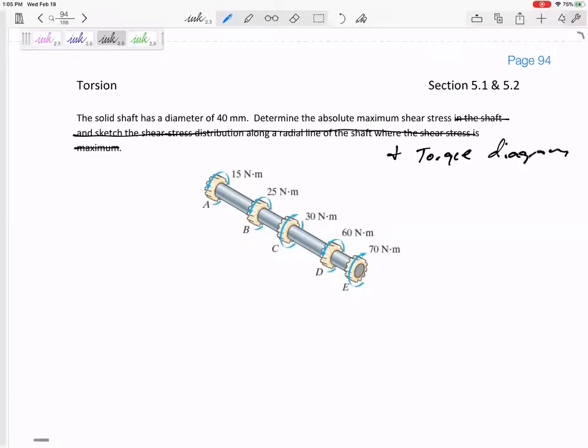Torque diagram. Okay, so I know that the maximum shear stress occurs on the outside edge, but is it on the outside edge in that section, or that section, or that section? We've got four different sections where the maximum stress might occur.